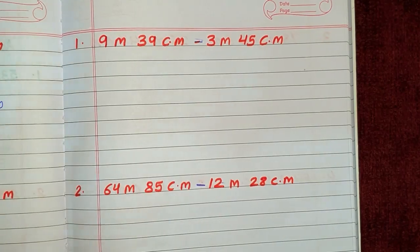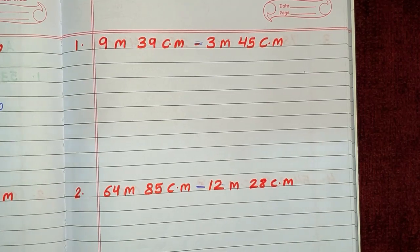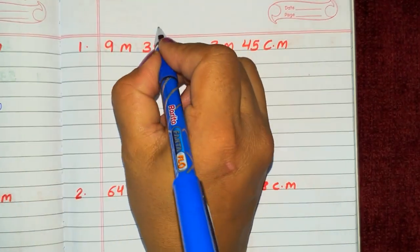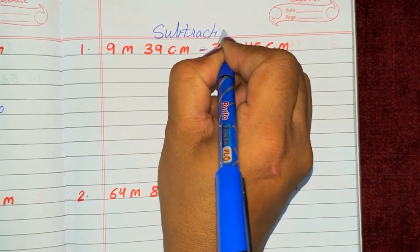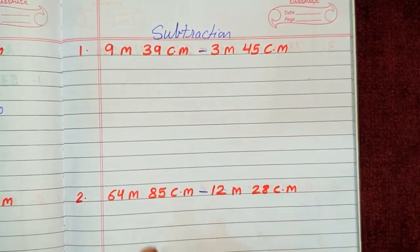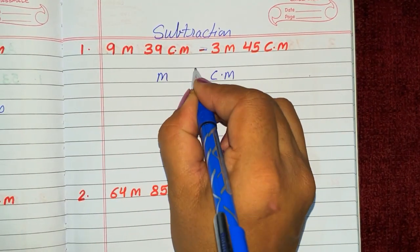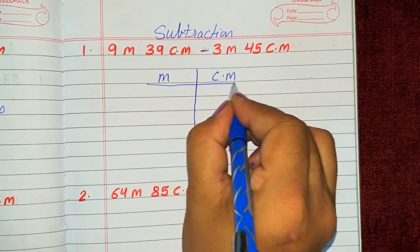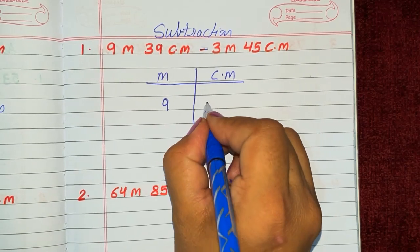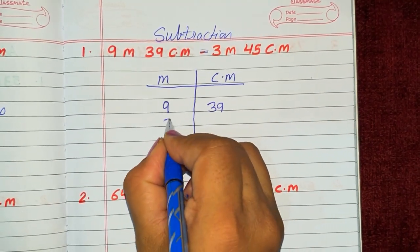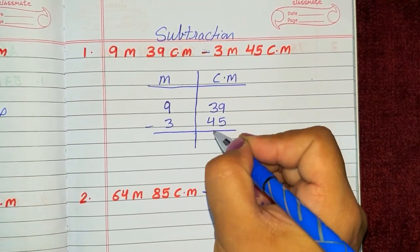Now we will do the subtraction of length, or subtraction of meter and centimeter. We will do the same: make the column of meter and centimeter, write meter on the meter side and centimeter on the centimeter side, and then subtract.